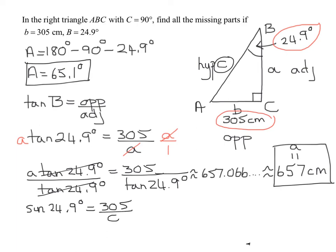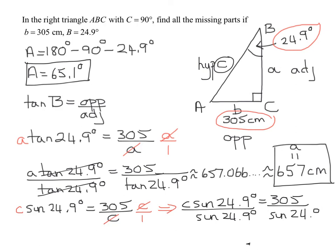So multiplying both sides of this equation by C, I'm going to get C times the sine of 24.9 degrees equals 305. And now all I have to do is divide both sides by the sine of 24.9 degrees, and that will give us C.